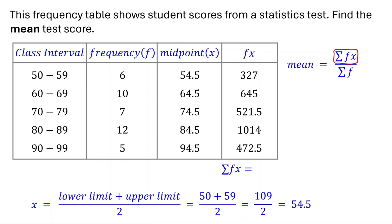Now add up all the products of midpoint and frequency. When we sum these values, we get 2980. Next, add up all the frequencies, that is the total number of students. When we sum these values, we get 40.